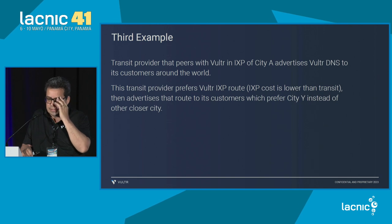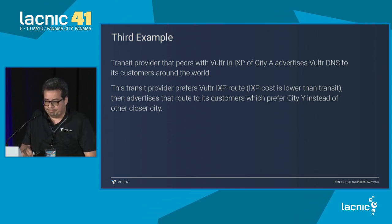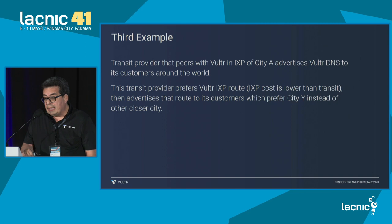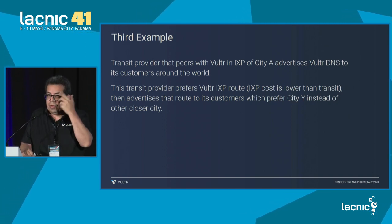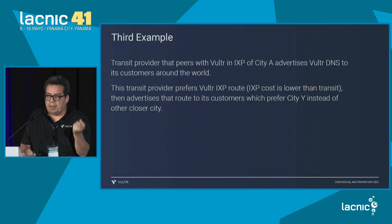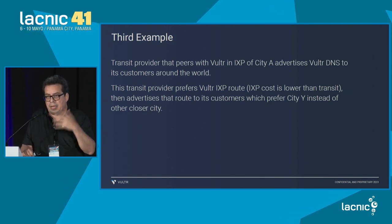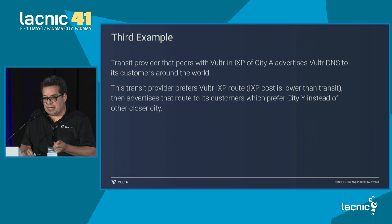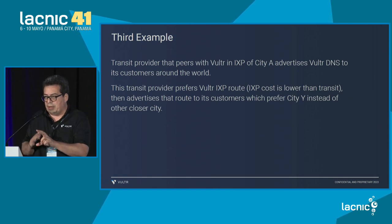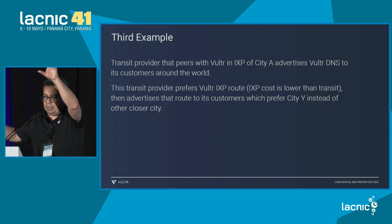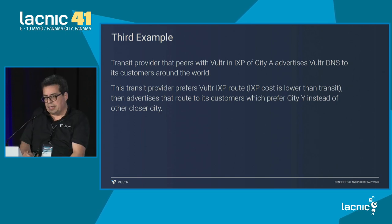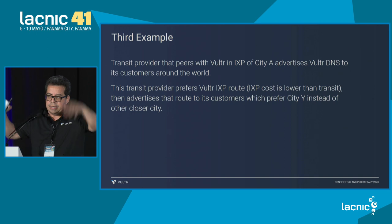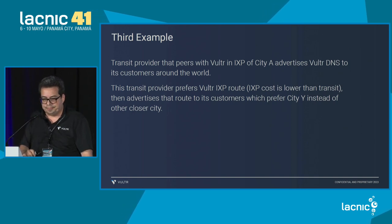The third example: connection of IXPs. What they did was to forward traffic to their clients, peering with local transit providers that in their countries are larger internet providers. The clients in that city, closer to another node where the peering was done, chose to go to Miami instead of going to Brazil, Chile, or Mexico.